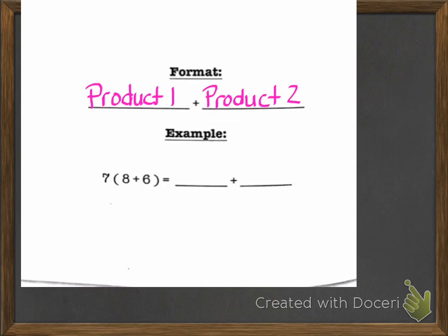We're going to take the 7, which is our number on the outside of the parentheses, and multiply it by the 8. That's where we're getting product number 1. 7 times 8 gives us 56. Now we're going to take that 7 and multiply it to the second number inside those parentheses. We're going to do 7 times 6. That product is 42.